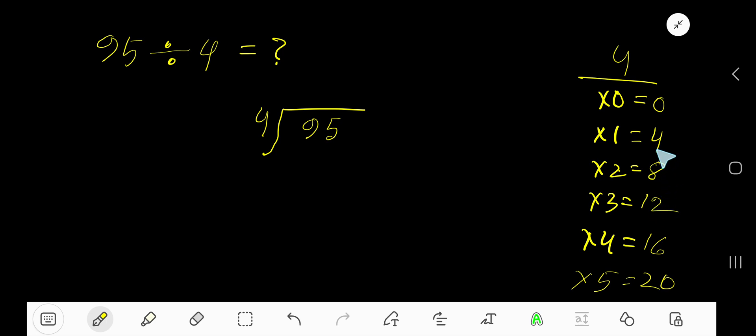So 4 goes into 9 how many times? 2 times, right. 2 times 4 is 8. Subtract, bring down this 5. Now we have 15. 4 goes into 15 how many times? 4 times is 16, so 3 times, right. 3 times 4 is 12. Subtract, and we get 3. Now our answer is 23 remainder 3.